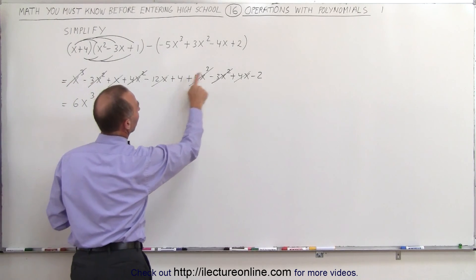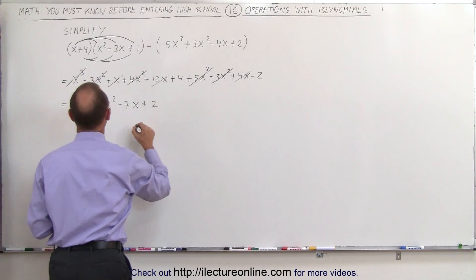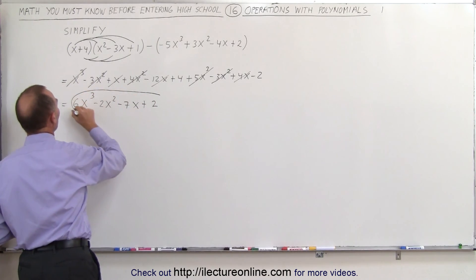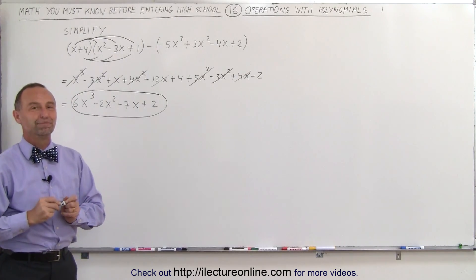So here we have a plus 4 and a minus 2. 4 minus 2 gives us plus 2. And this is then the simplest form of the expression that we started with. And that's how that's done.